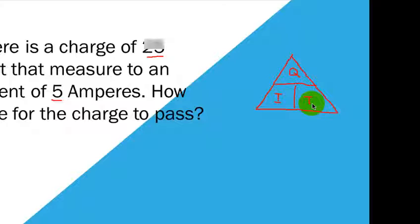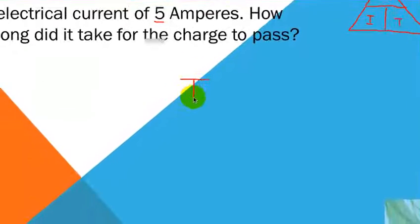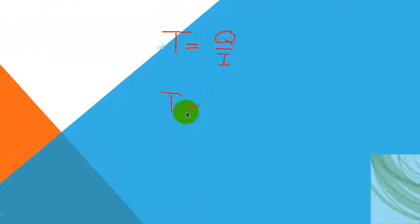Once again, we are trying to solve t. So you cover the t. And then the variables that you are going to use are q and i. And since there is a line here that indicates division, our formula would be t equals q divided by i. So we will write that down. Now we have to replace the variables. t equals 25 coulombs over 5 amperes.